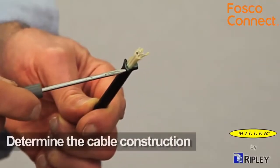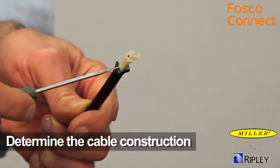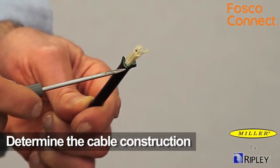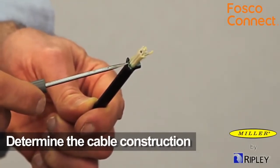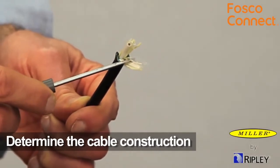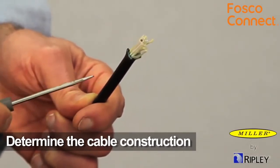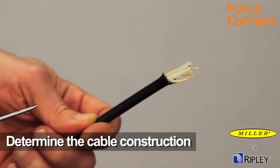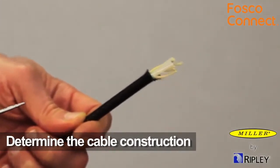To begin using the ACS2, first determine the cable construction. Multi-fiber cable construction may have a strength member that is internal and adjacent to the fibers or external and adjacent to the armor and jacket. Determining the cable construction may aid in preventing tool damage.